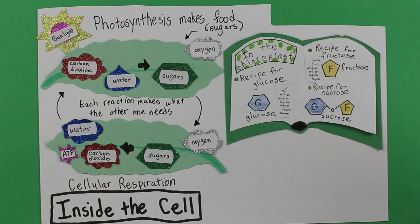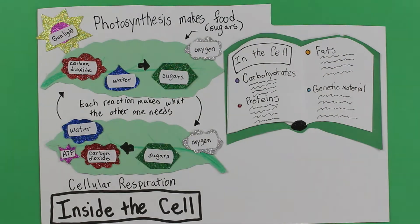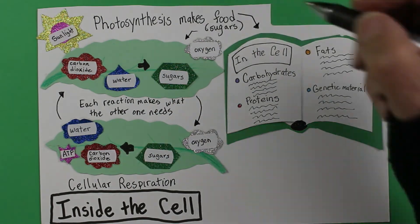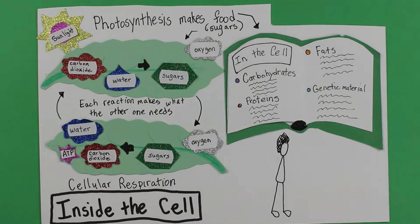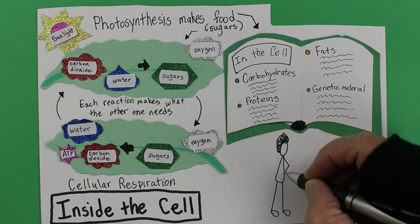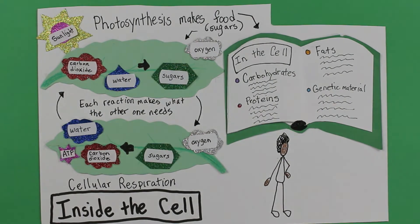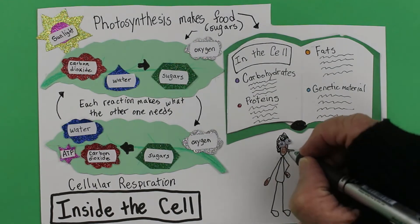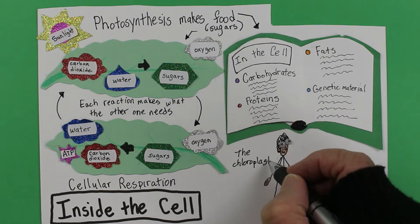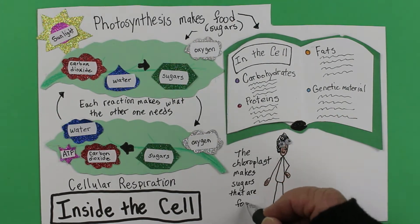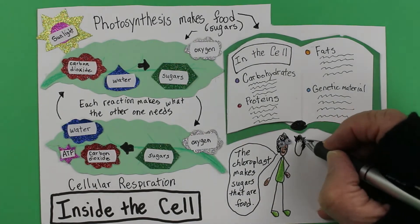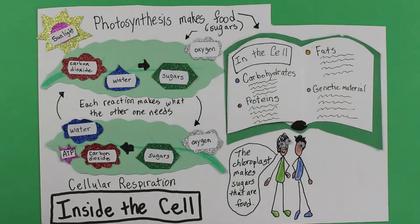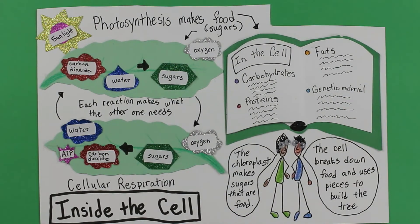Let's turn the page of Cog's recipe book and see the second way those sugars are being used. Outside the chloroplasts, the cell breaks down those sugars and reassembles them into complex carbs, fats, proteins, and some genetic material, all the stuff life is made of. The chloroplasts make sugars that are food molecules. The cell breaks down those sugars and uses the pieces to build the tree. Now we know where that 164 pounds of Van Helmont's tree came from.